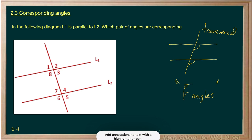So let's highlight the corresponding angles on our diagram. 1 and 7 are corresponding. 8 and 6 are corresponding. 2 and 4 are corresponding.